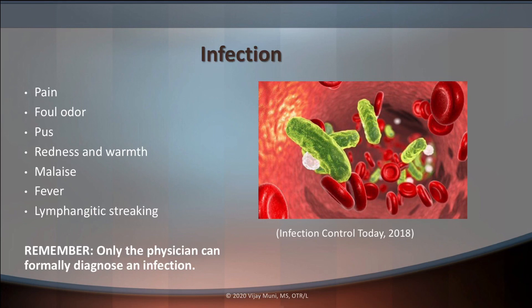With wound healing, there's always a big chance for infections to occur. We can usually tell if there's an infection by a lot of pain, a foul pungent odor, pus, redness and warmth, malaise, and lymphangitic streaking — the red streak marks visible on our skin. Remember that as therapists, we cannot diagnose an infection; the physician must diagnose it.